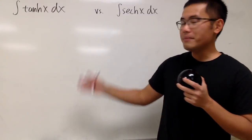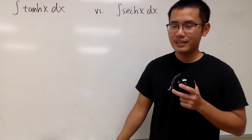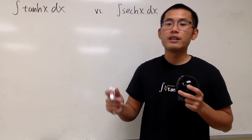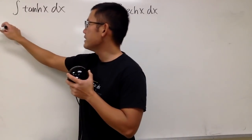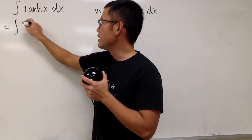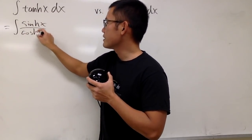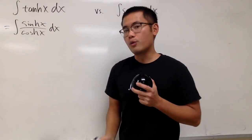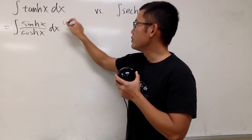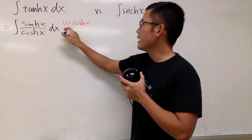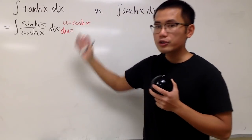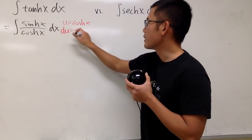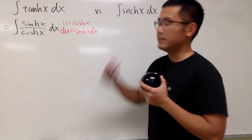Hopefully you got the chance to try them. Now let's do this one first. The strategy for this one is very similar to how you integrate the original tangent x. We can write it as sinh x over cosh x. Then we can do a u-substitution, letting u equal the bottom function, which is cosh x. Differentiating cosh, remember the derivative of cosh is actually positive sinh, so this is just positive sinh x.